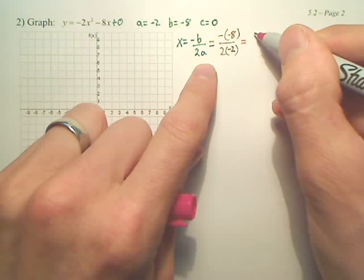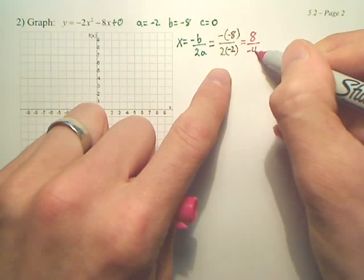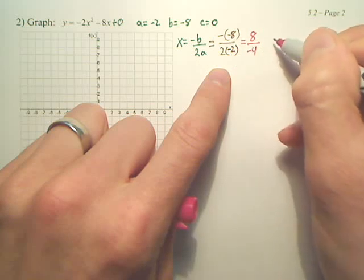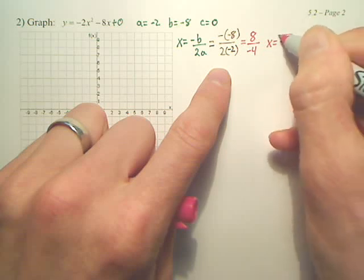Negative negative eight is positive eight. Two times negative two is negative four. So what does x equal? Negative two.